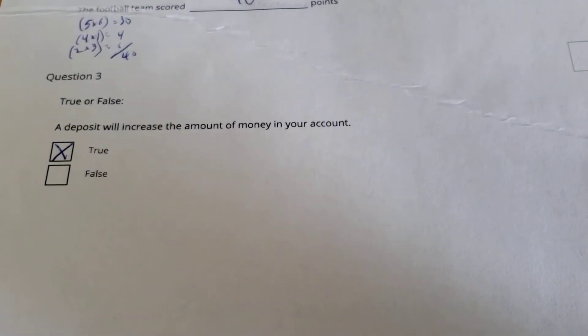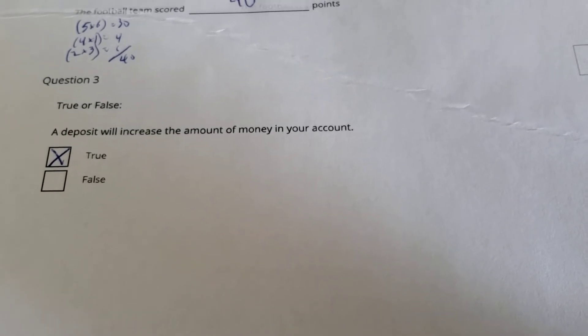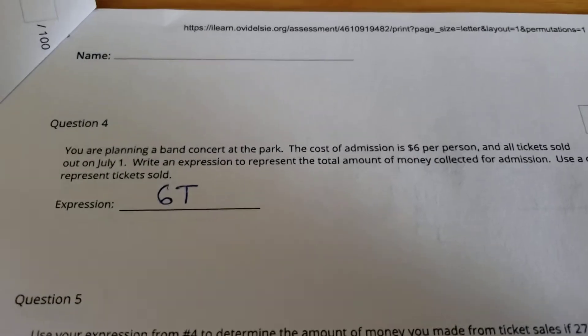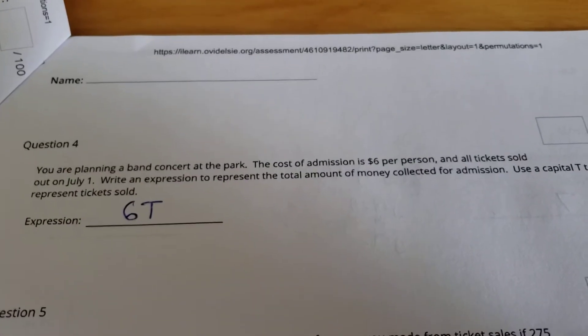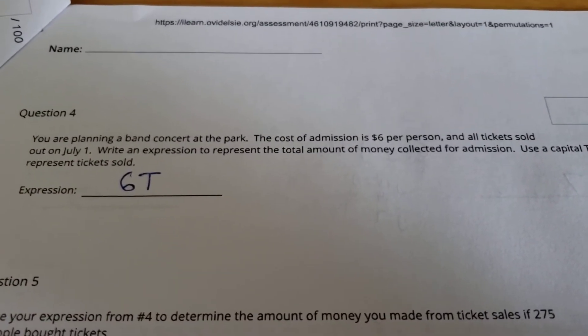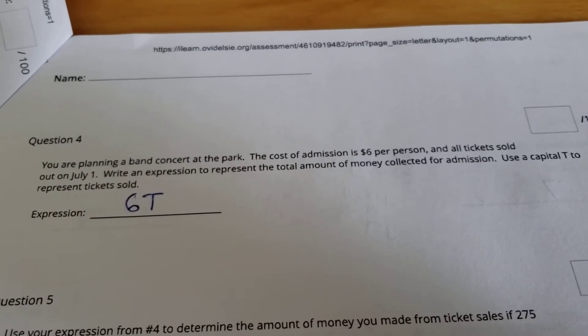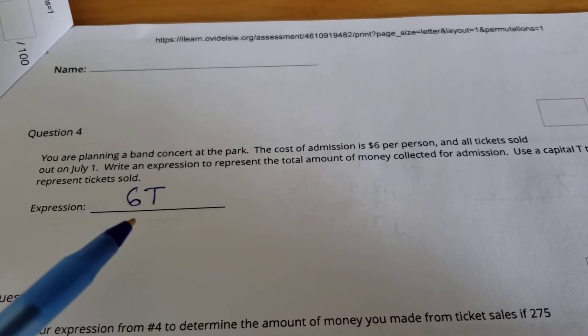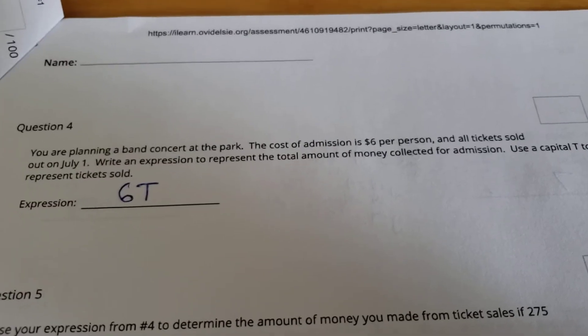Number 3, true or false, a deposit will increase the amount of money in your account? That is true. Alright, next up, question four. If you're planning a band concert at the park, cost of admission is $6 per person. Write an expression to describe this scenario using a T for tickets sold. It would be 6T, capital T there.